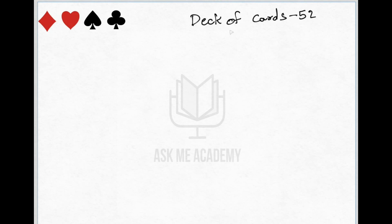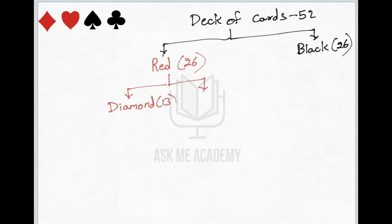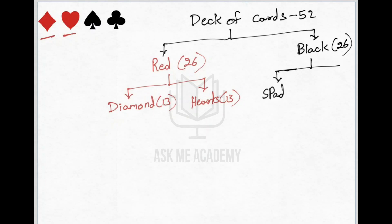These 52 cards are divided into two colors. Black has 26 cards and red has 26 cards. Red is again divided into two shapes: diamonds having 13 cards and hearts making 13 cards. Black colored cards are also made of two shapes: spade with 13 cards and clubs with 13 cards.